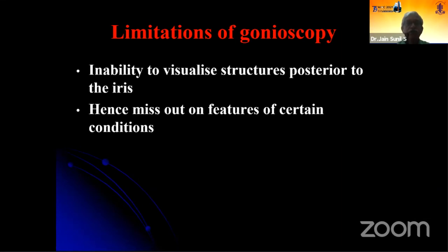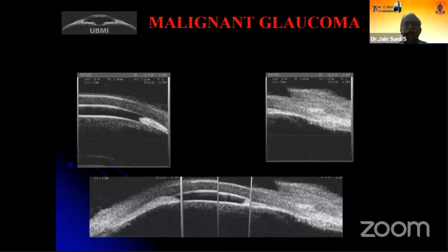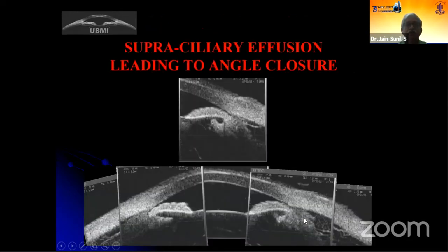Hence, you could miss certain features of certain conditions. For example, in plateau iris, you might not be able to see the absence of the ciliary sulcus or the medial rotation of the ciliary processes. In malignant glaucoma, because the anterior chamber is already very shallow, you will not be able to do gonioscopy — you have to use imaging modalities to diagnose. Supraciliary effusion leading to angle closure causing a shallow chamber is another situation where you might miss the effusion because you cannot see beyond the iris with a gonioscope.